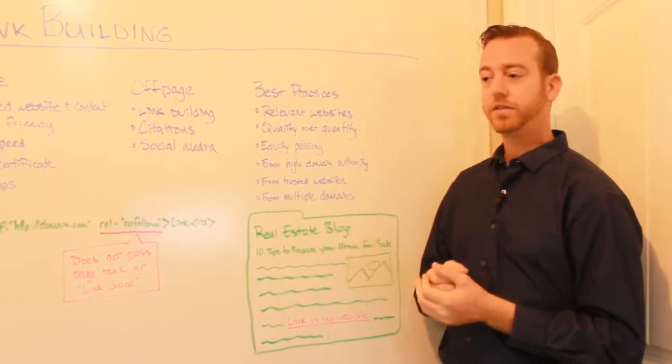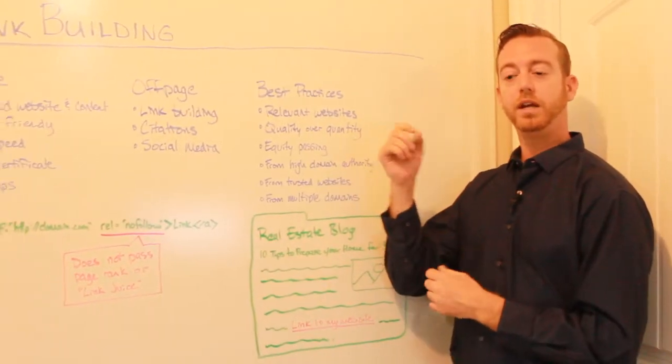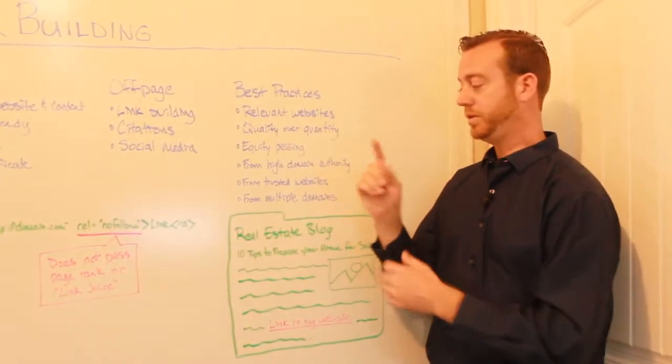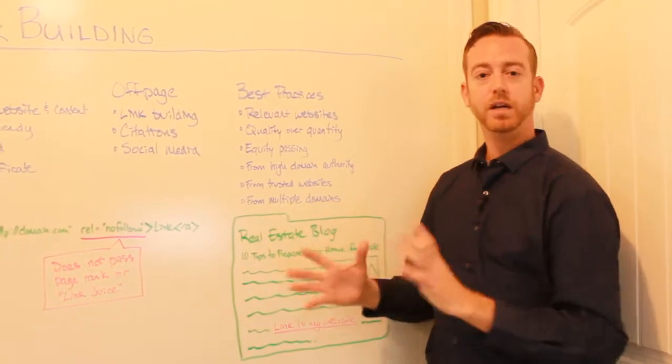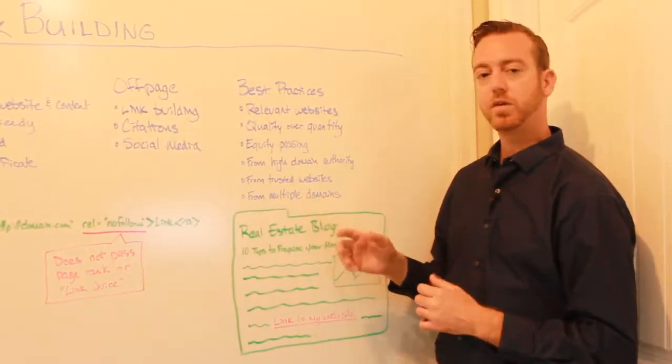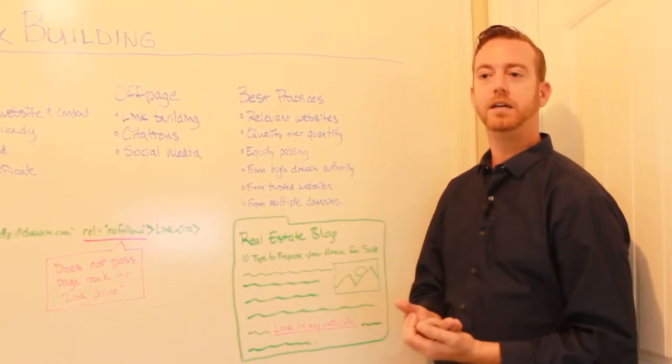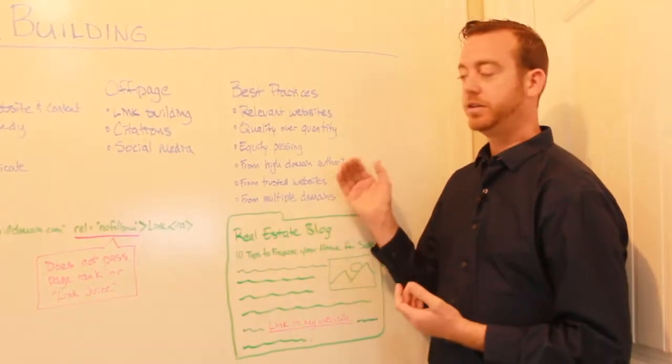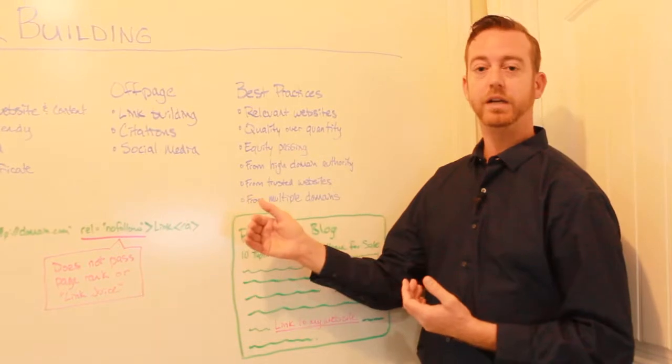You really want a website from a very high trusted source. For example, a link from CNN.com is a very high domain authority. One link from that is worth 10,000 links from real shady, non-relevant websites. So it's really important to go after links that actually make sense from trusted sources. And those links will have much more weight to it in Google's eyes.